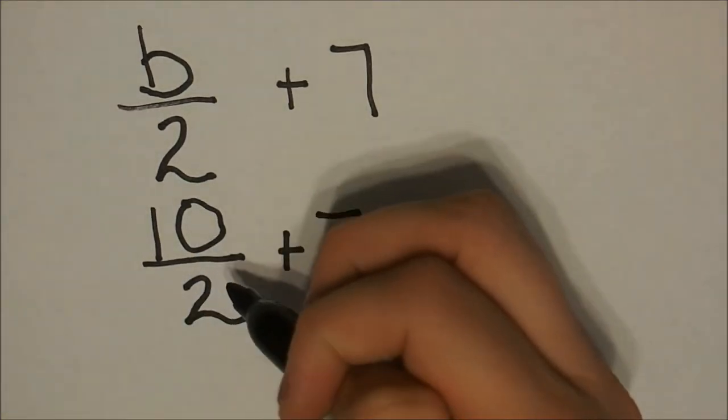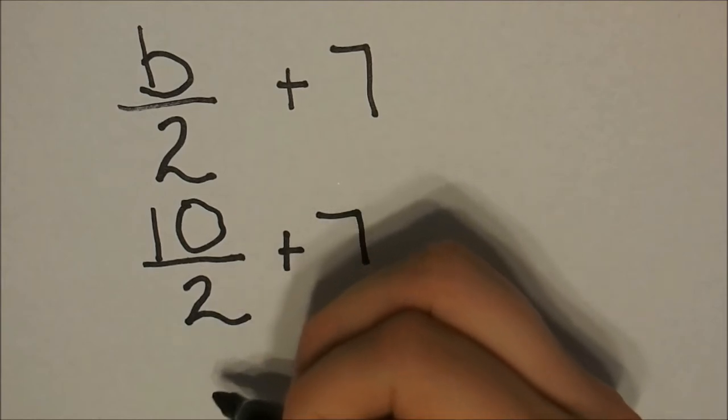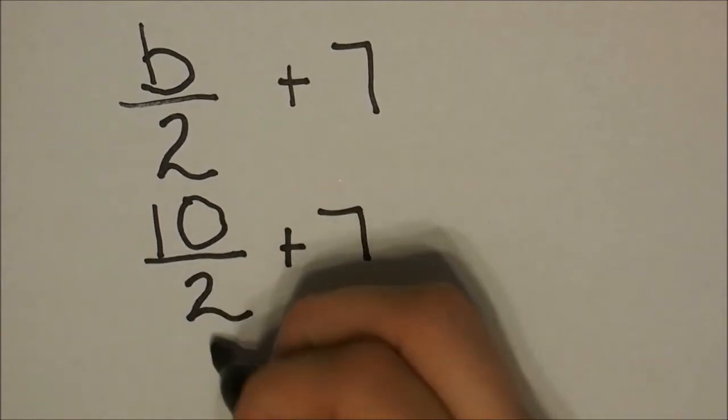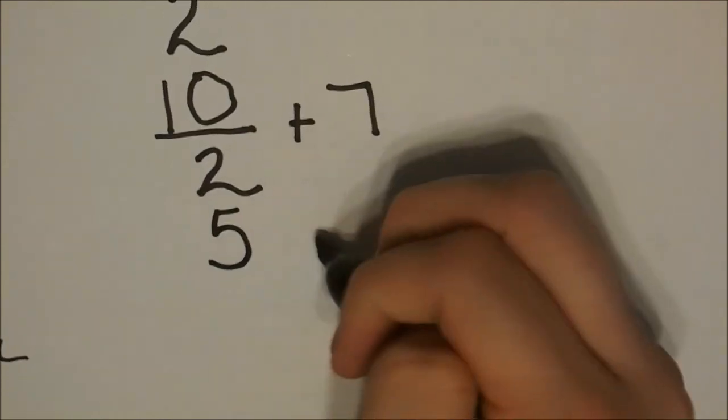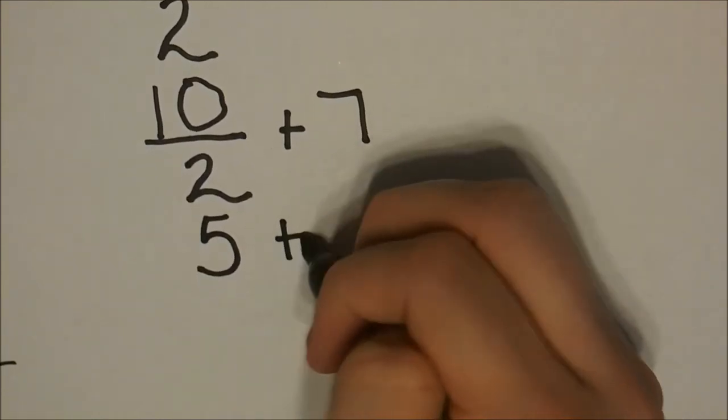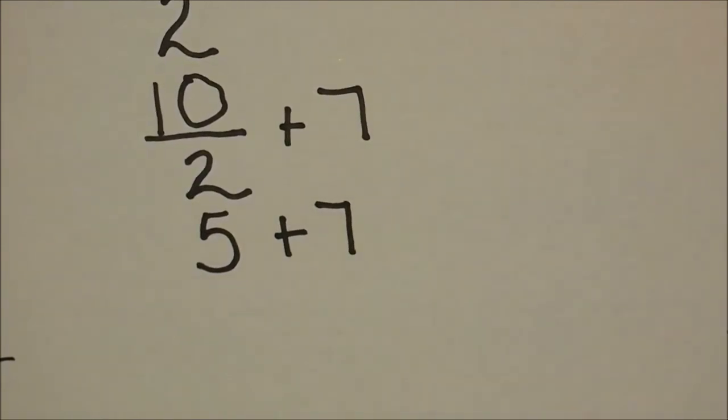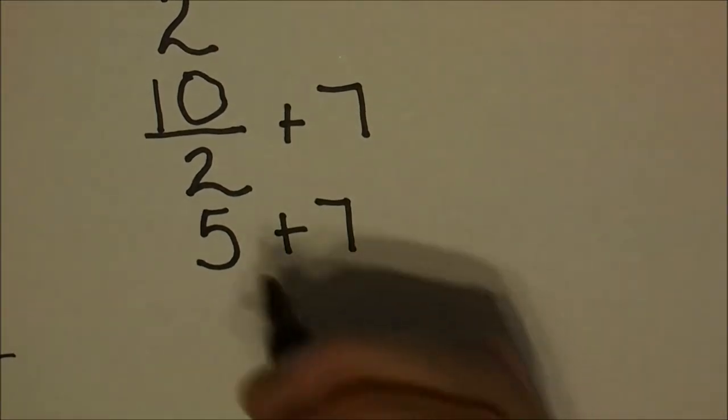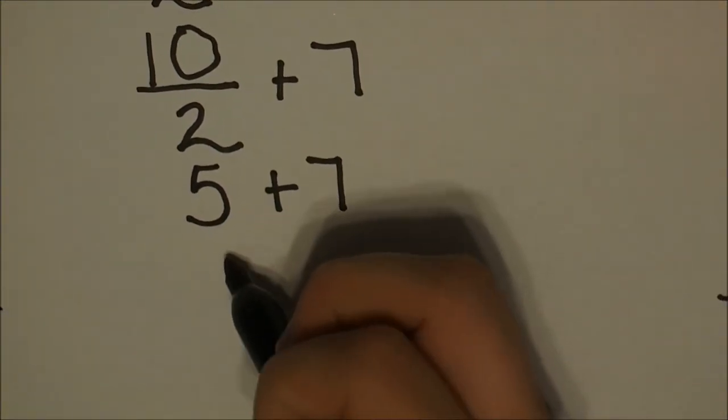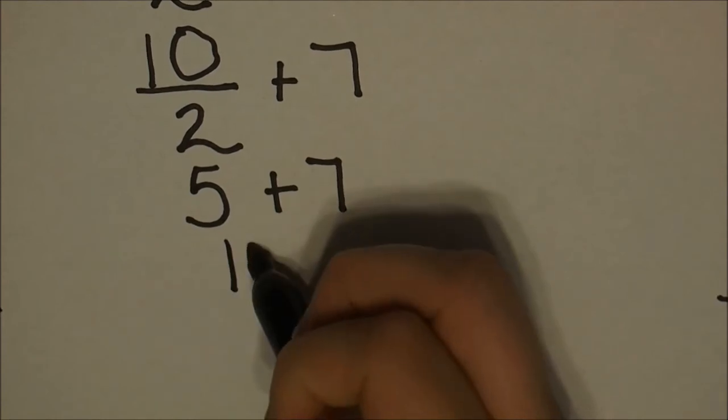We solve by using order of operations. And we divide first. Ten divided by two is five, and we bring down our plus seven. Now we're almost done. Let's add that together. Five plus seven is 12.